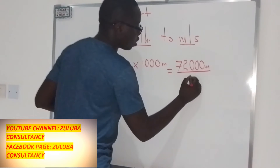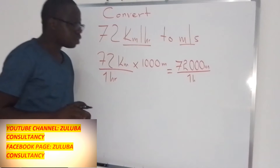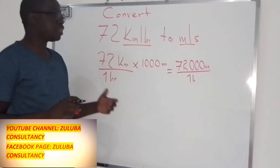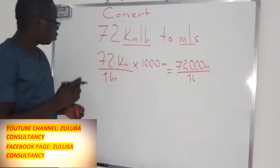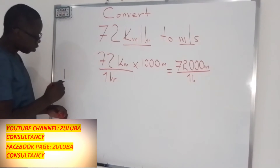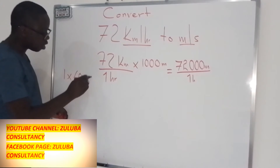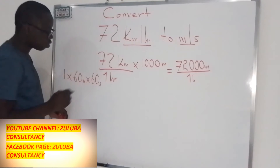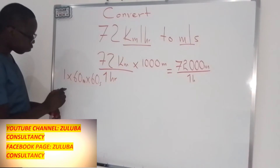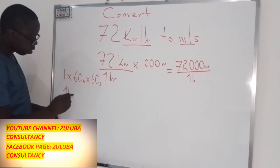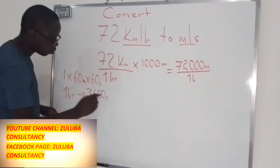This is divided by one hour. Now, that one hour can be converted to seconds. We know that one hour is equal to 60 minutes, which is again equal to 60 seconds — that is, one minute is equal to 60 seconds.